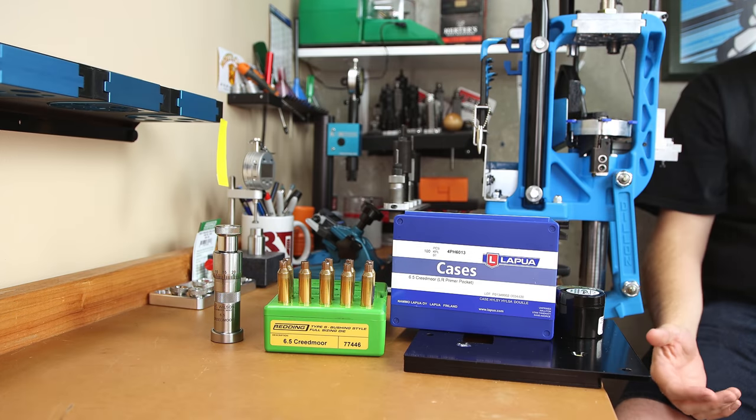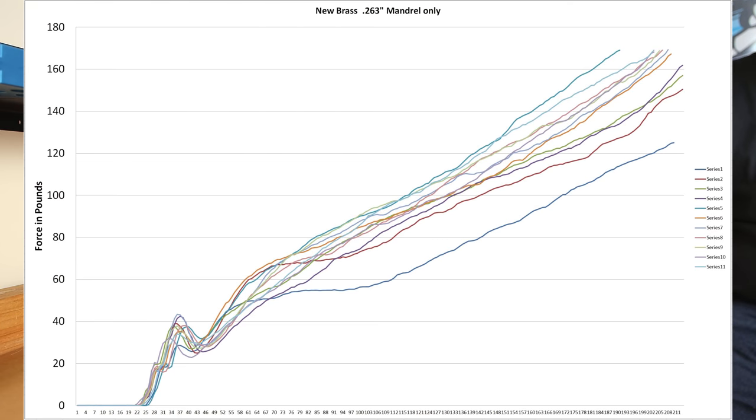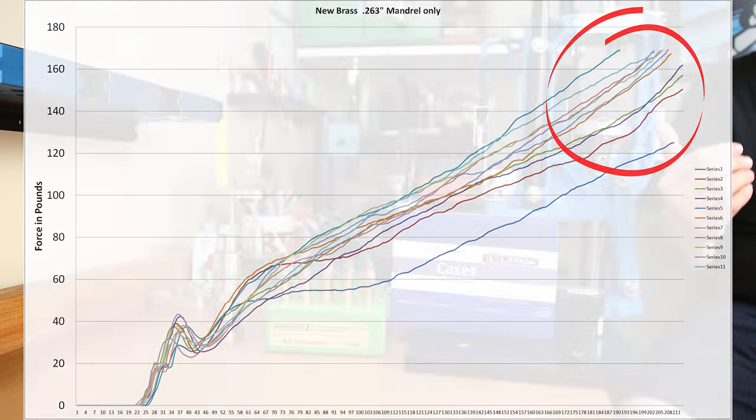So what happens when we decrease our neck tension a little bit more, or so we think? For option five, we're looking at this 263 thousandths mandrel, and we can see that our initial force to start seating has been reduced fairly significantly. Most samples being under 40 pounds to start the seating process. We can see as the seating process is completed, the forces are not as consistent between our 11 different samples. Still pretty good, but even using our 263 thousandths mandrel, we can see that force increased pretty significantly, and some of our samples hit that 170 pound maximum.